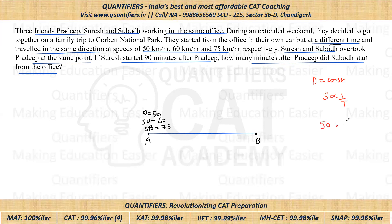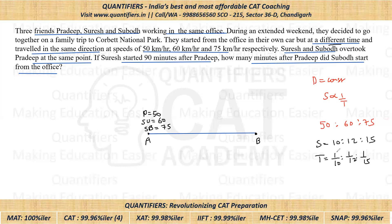We know the speeds, so let's find the ratio. Speed ratio is 50:60:75. Dividing each by 5 gives 10:12:15. Since time ratio is the reciprocal of speed ratio, time ratio is 1/10 : 1/12 : 1/15. To convert to integers, multiply each by the LCM of 10, 12, and 15, which is 60. So the time ratio becomes 6:5:4.